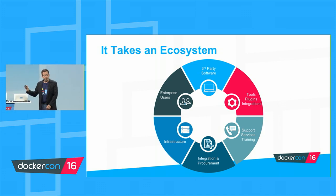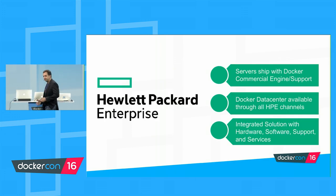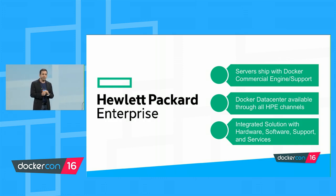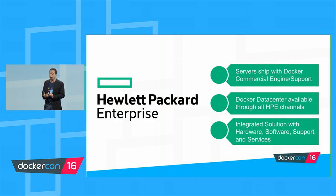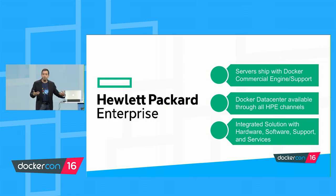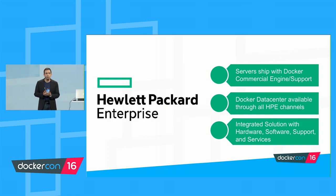Two weeks ago at HPE Discover, we announced a broad-ranging partnership with Hewlett Packard Enterprise. Every ProLiant server, along with other server lines, will ship with Docker commercial engine and support included by default — getting started with Docker is as simple as getting your first server. Docker Data Center is available through all HPE channels with integrated support and purchasing, validated references with HPE converged and hyper-converged systems, integrations with 3PAR, and the ability to connect Docker's control plane with the HPE control plane using OneView.